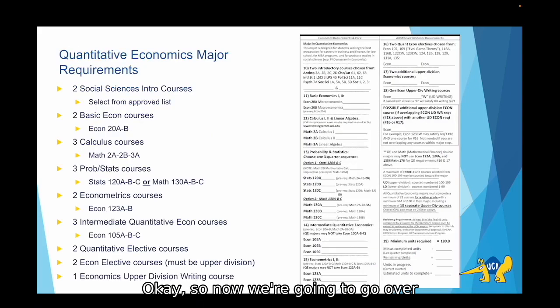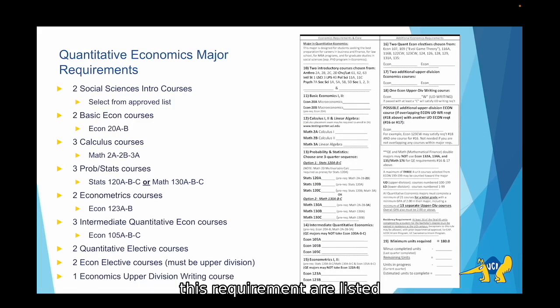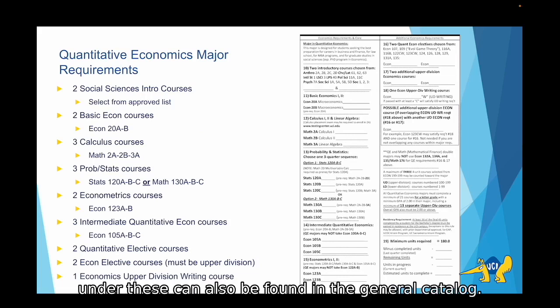Now we're going to go over the major requirements for the BA in quantitative economics. To start with, you'll need to take two social sciences introductory courses. These classes will be from social sciences disciplines outside of economics, so classes in anthropology, language science, maybe sociology. The full list of classes that count towards this requirement are listed on the degree check to your right. These can also be found in the general catalog under the BA in quantitative economics.